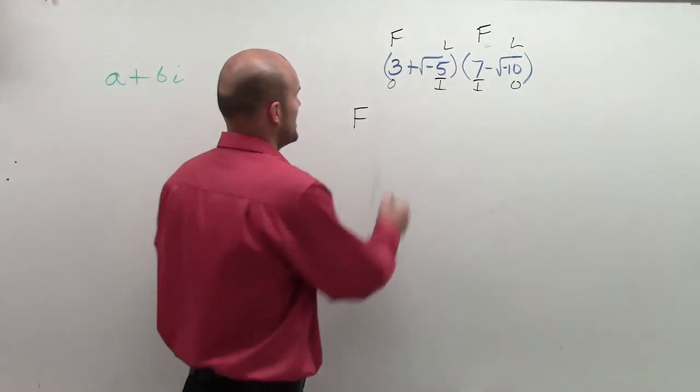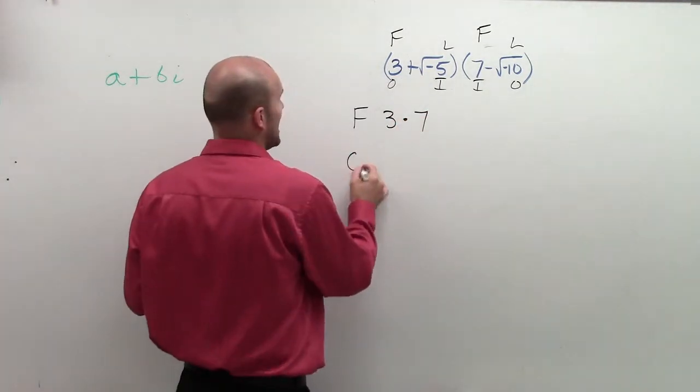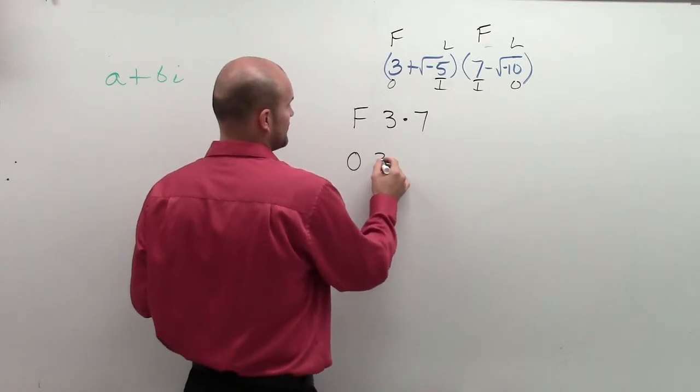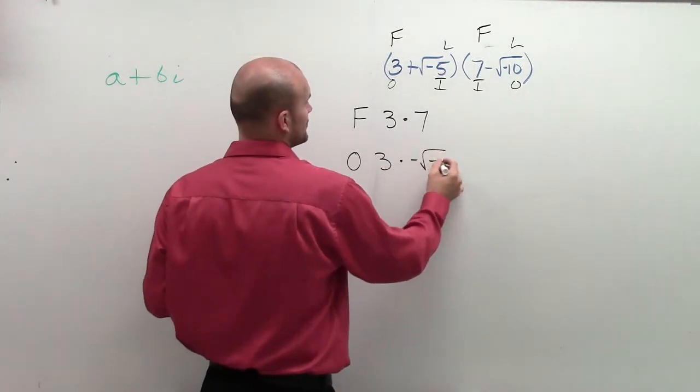So let's do our first two terms. We have 3 times 7. That's pretty good. Outer terms: it's going to be 3 times negative square root of negative 10.